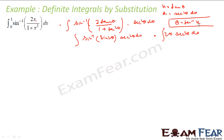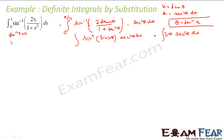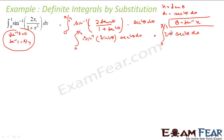When x = 0, θ = tan⁻¹(0) = 0. When x = 1, θ = tan⁻¹(1) = π/4. So since x is varying from 0 to 1, θ is varying from 0 to π/4. So I have to find the value of ∫2θ · sec²θ dθ from 0 to π/4.